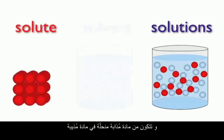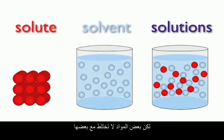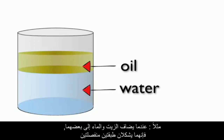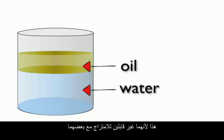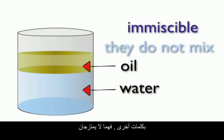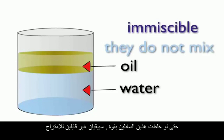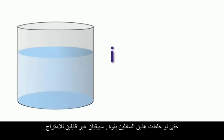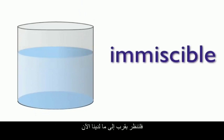But some substances do not dissolve in one another. As an example, when oil and water are added together they form two separate layers, because they are immiscible — they don't mix. Even if you shake the liquid, they will still remain immiscible.